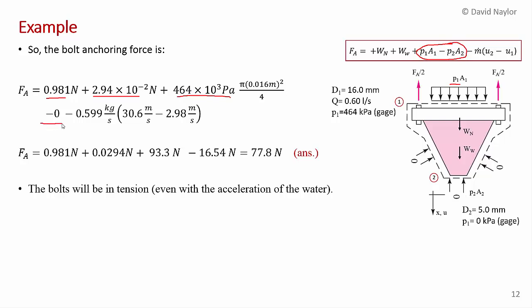And then you've got minus m-dot times the change in the velocity. This is the momentum term, the change in momentum of the fluid as it passes through the nozzle. So I've put the numbers in here, the weight of the nozzle, the weight of the water, which is negligible in this case. The pressure force, the net pressure force on the nozzle. And then that thrust term, which actually acts in the negative x direction because the water is accelerating.